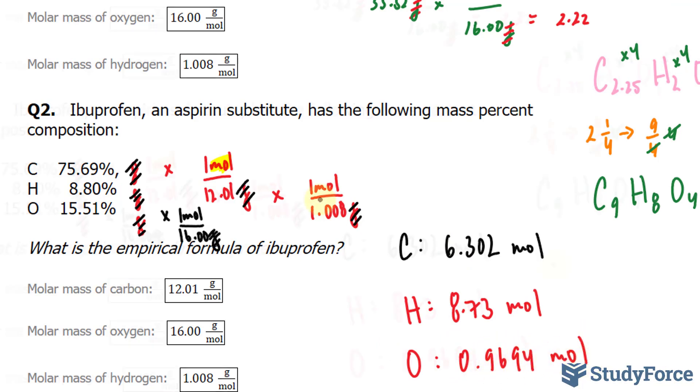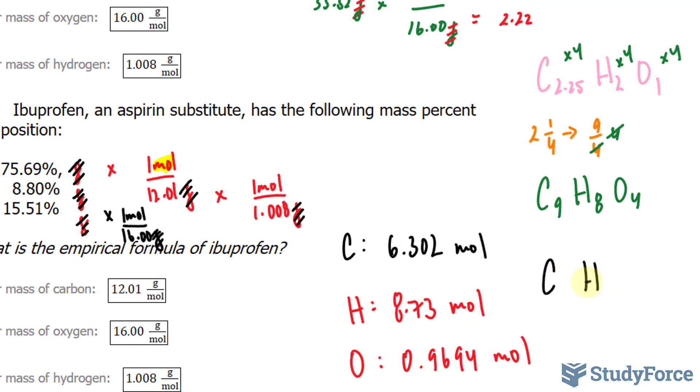So our formula will contain the atoms C, H, and O. This will have 6.302 moles, this will have 8.73, and this one will have 0.9694. I'll divide all three of these numbers by the smallest. This will become 1.